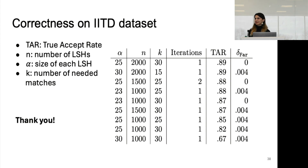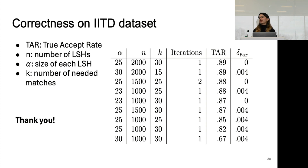Question: Is the secret sharing threshold-based? Answer: We use a Reed-Solomon error correcting code. The minimum distance of Reed-Solomon codes is n minus k minus the number of erasure places over two. That is the threshold for the number of errors we can correct.